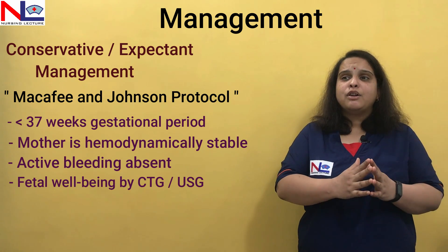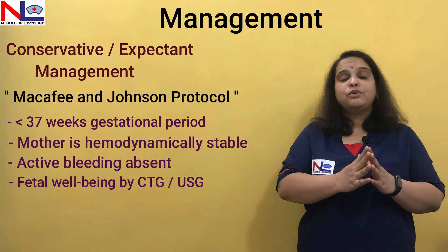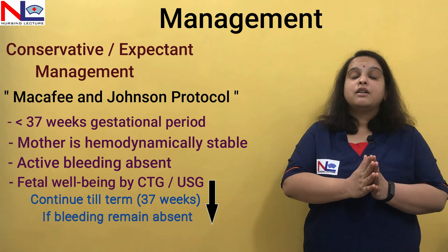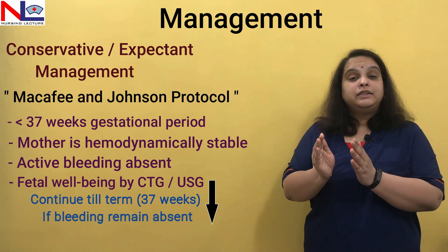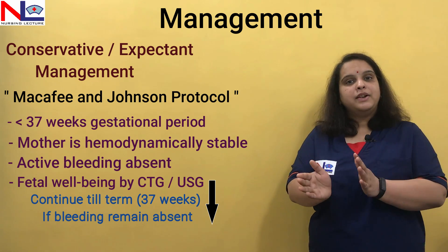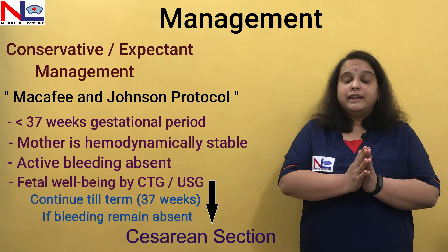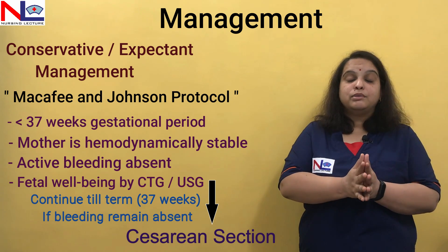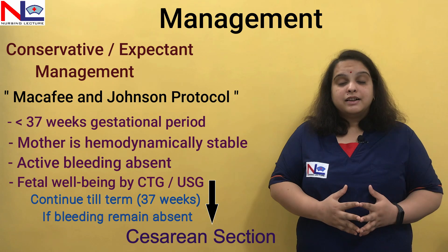Only if all four criteria are met can we go with conservative management, as there is no immediate urgency for caesarean section. We wait until the fetus is mature and the gestational age reaches 37 weeks — until term pregnancy is reached. At that point, we plan for caesarean section, because practically in any degree of placenta previa, caesarean section is selected to avoid risk to both the fetus and the mother.